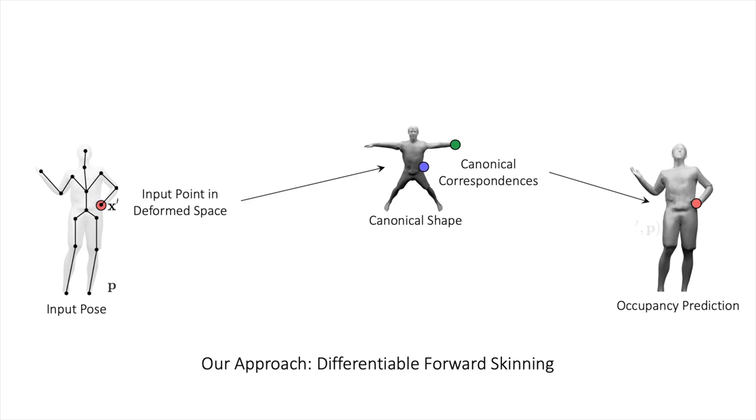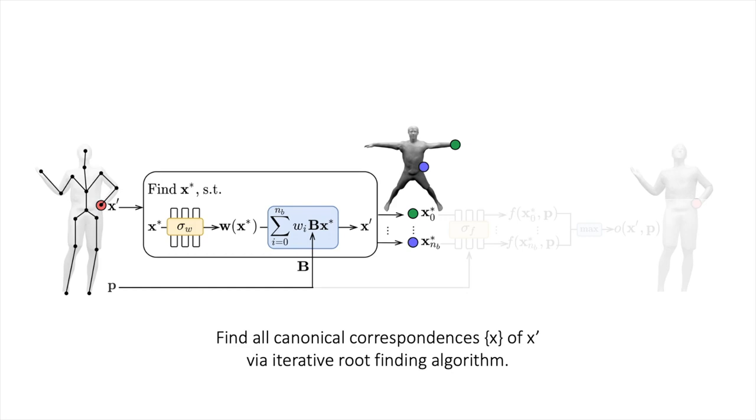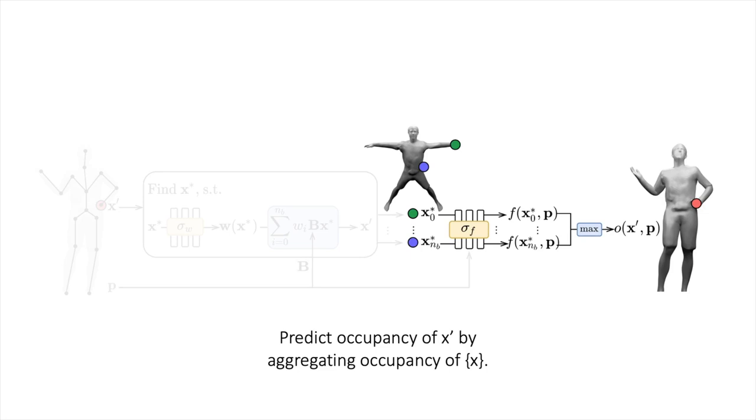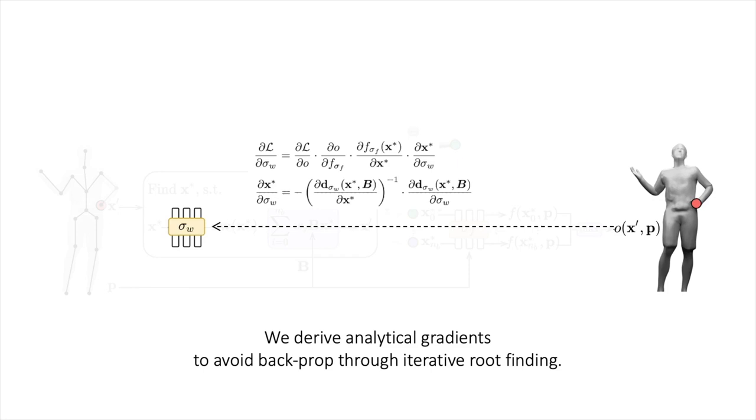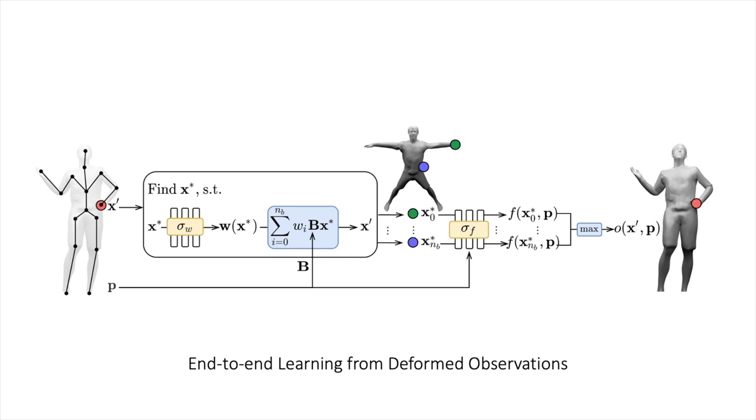We tackle this problem by deriving a differentiable forward skinning formulation. More concretely, we first find all canonical correspondences of a deformed point via iterative root finding. We then predict the occupancy of the deformed point by aggregating occupancy information from the set of all roots while conditioning on the object pose. We derive analytical gradients for this process via implicit differentiation to avoid backpropagation through the iterative root finding algorithm. This enables our model to learn both shape and forward skinning weights end-to-end from deformed observations.